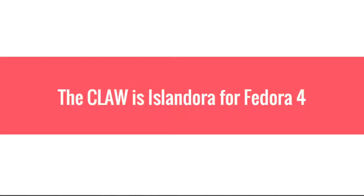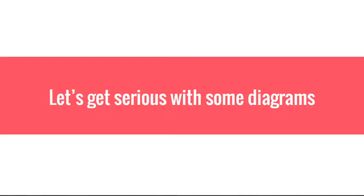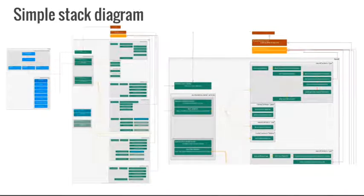And there are many ways of understanding what the Claw is right now. So I will start telling you that the Claw is Islandora for Fedora 4. That's basically. You know that. We have been talking about this project since a lot of time, like a year or more.